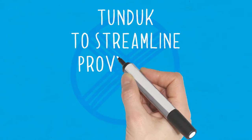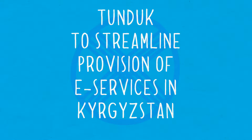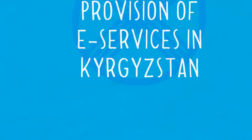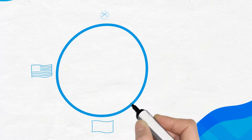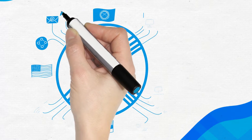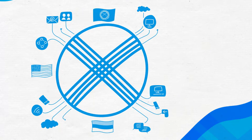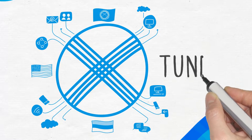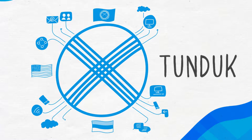Tunduk to streamline provision of e-services in Kyrgyzstan. The US, Estonia and Kyrgyzstan have pooled their resources to develop the heart of this e-state, the interoperability solution called Tunduk.